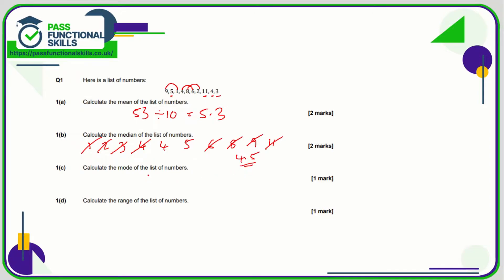The mode is the one that crops up the most, and we can see that there are two 4s — more than any other number. So the mode is 4. And the range is simply 11 minus 1 — biggest minus smallest — so the range is 10.